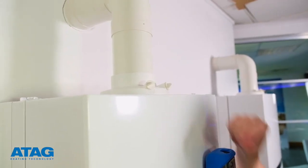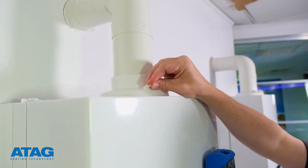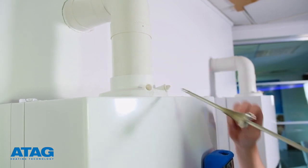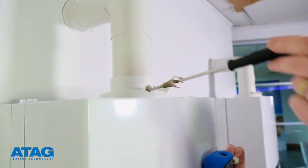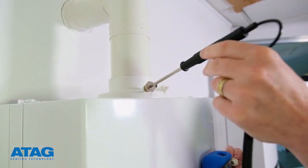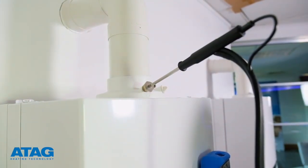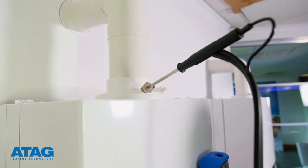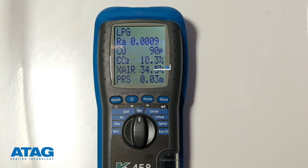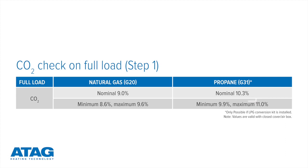Calibrate the flue gas analyzer and then insert the flue gas probe of the analyzer into the flue turret's left-hand side sample point. Next, check whether the CO2 values displayed on the analyzer screen correspond to this table.